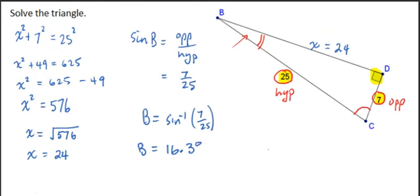Now it's easy to figure out angle C. Angle C, we can use the angle sum of a triangle being 180. So it's going to be 180 degrees minus the 90 degrees from angle D minus the 16.3 degrees from angle B. So angle C will work out to be 73.7 degrees.